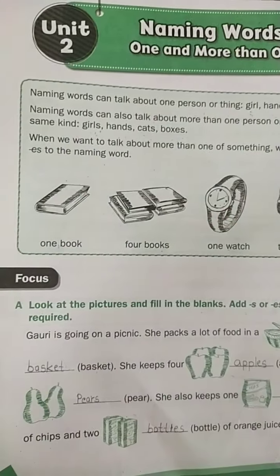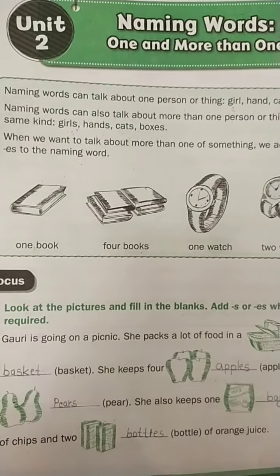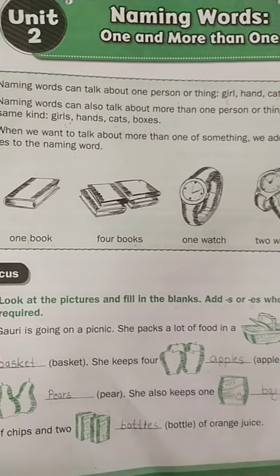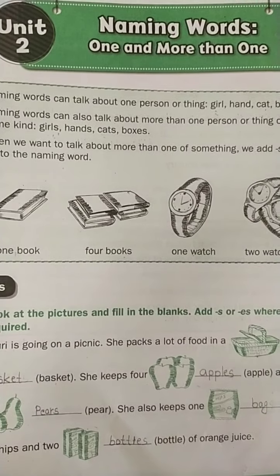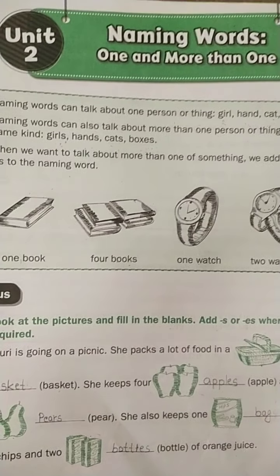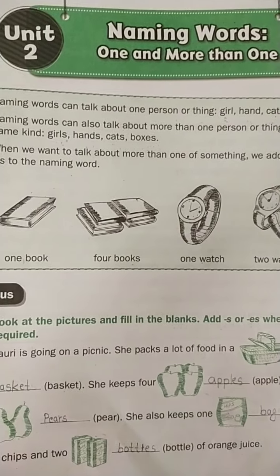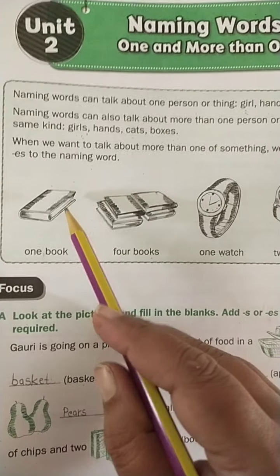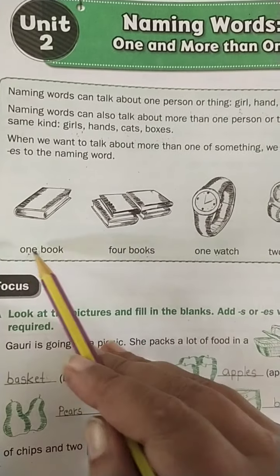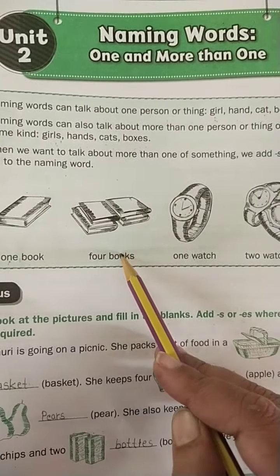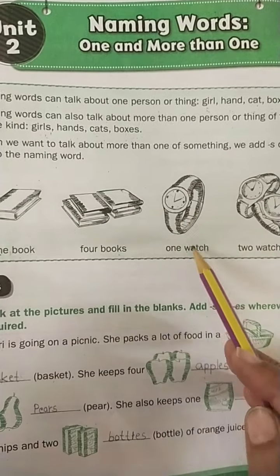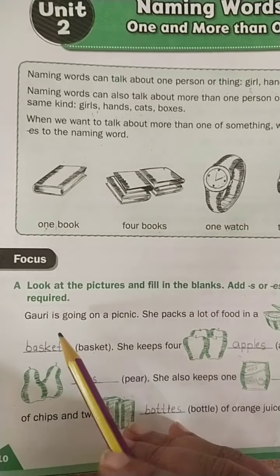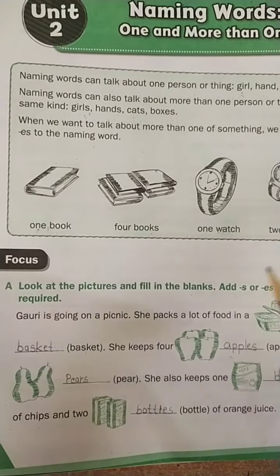When we talk about more than one, we add -s or -es to the naming word. For example: one book, four books; one watch, two watches.